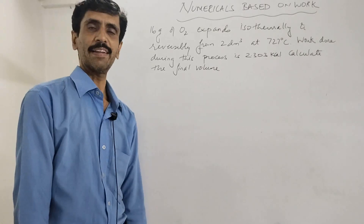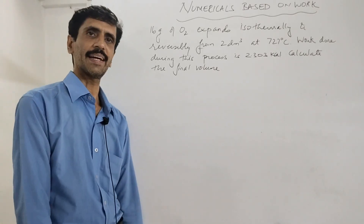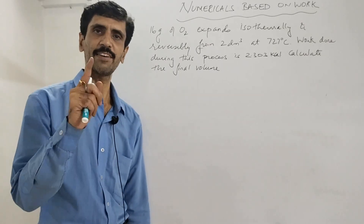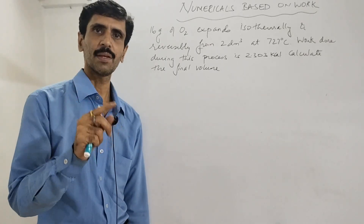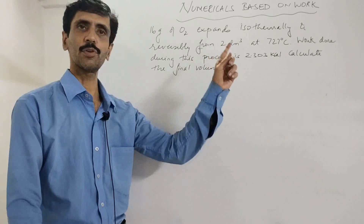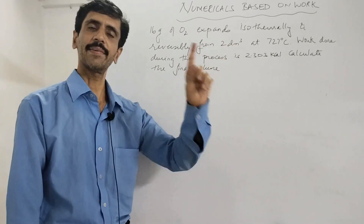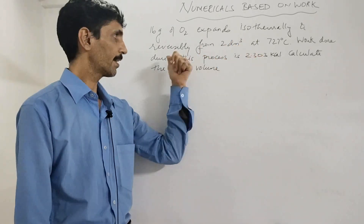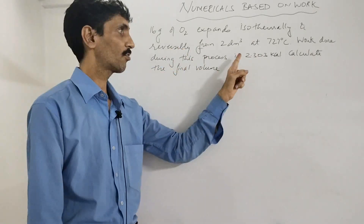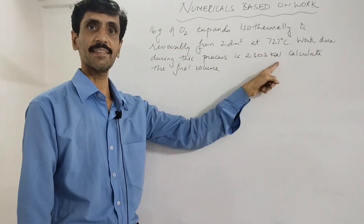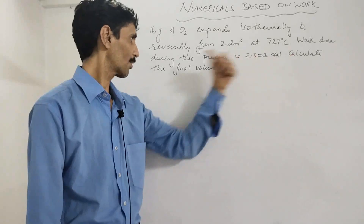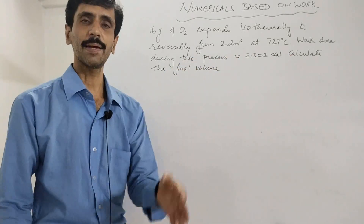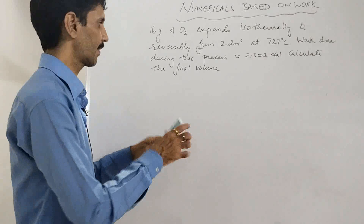Now moving to the next numerical: 16 grams of oxygen expands isothermally and reversibly from 2 dm³ at 727 degrees Celsius. The work done during this process is 2.303 kilocalories. Calculate the final volume. As explained, we start with the data first.